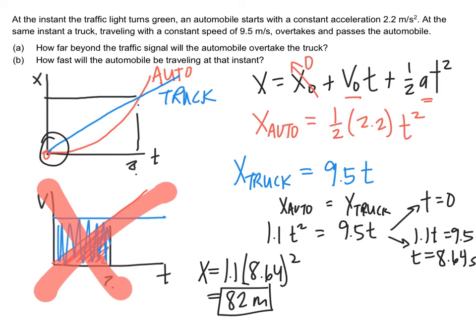And then for the second one, I need to know how fast the car is traveling at this moment. You could pull up a new kinematics equation, or you could just take the derivative of this expression that you found. So the dx dt of 1.1t squared would be 2.2t. And so when I plug in my time, 8.64, this comes out to be 19 seconds.